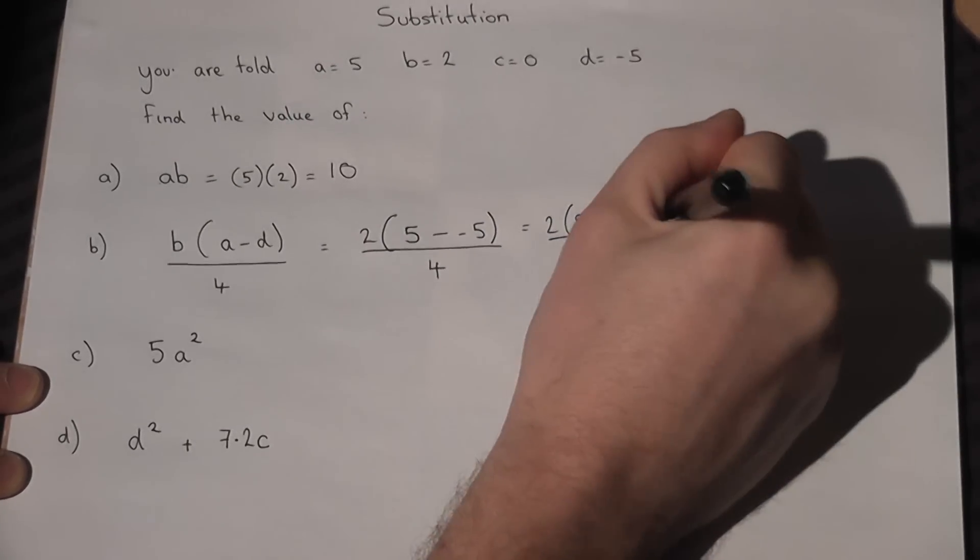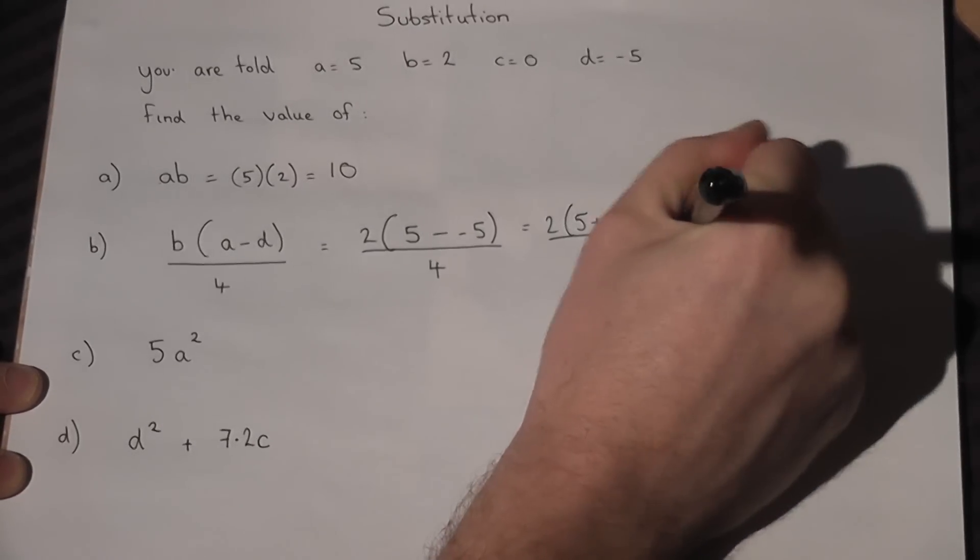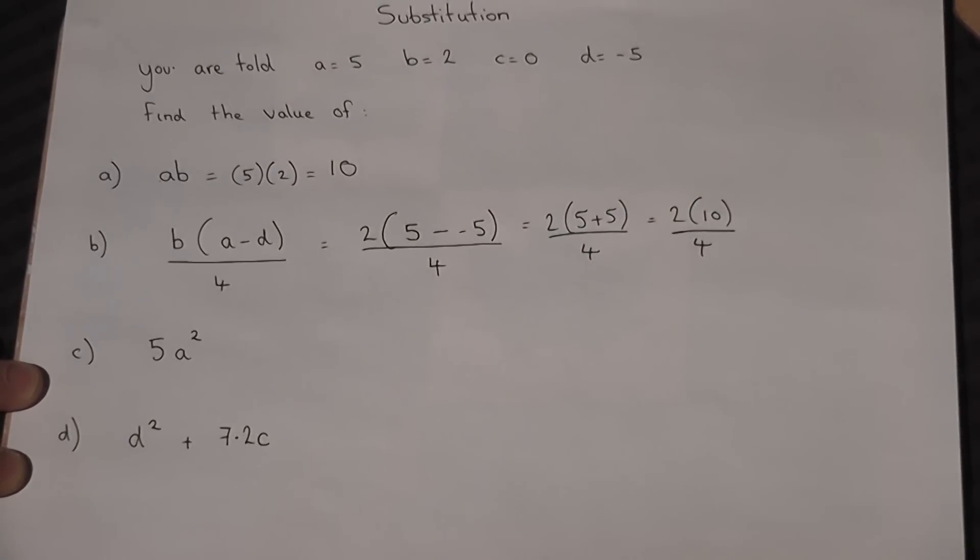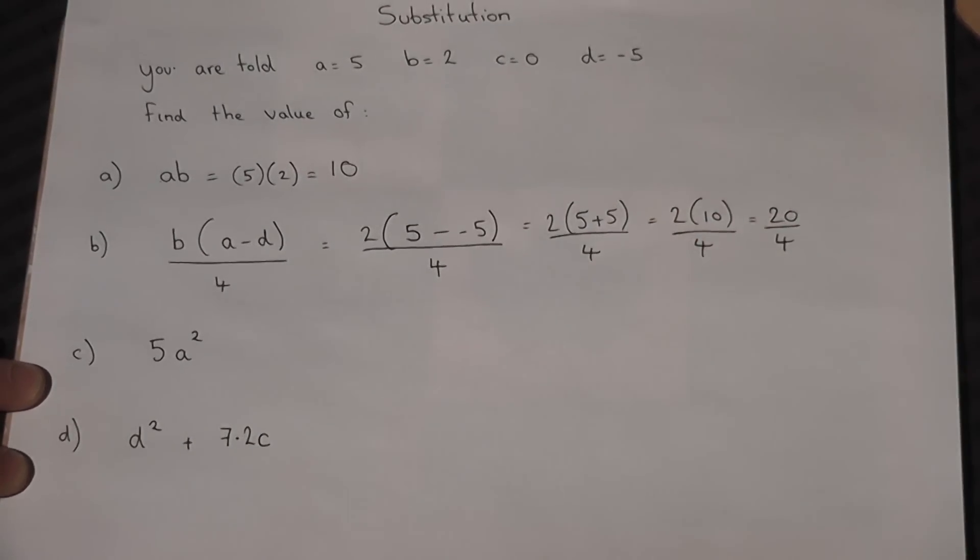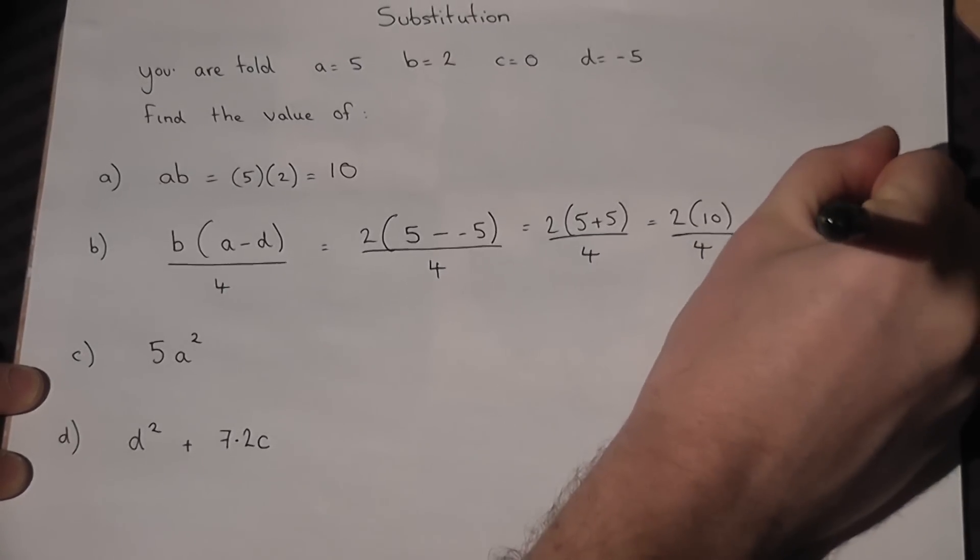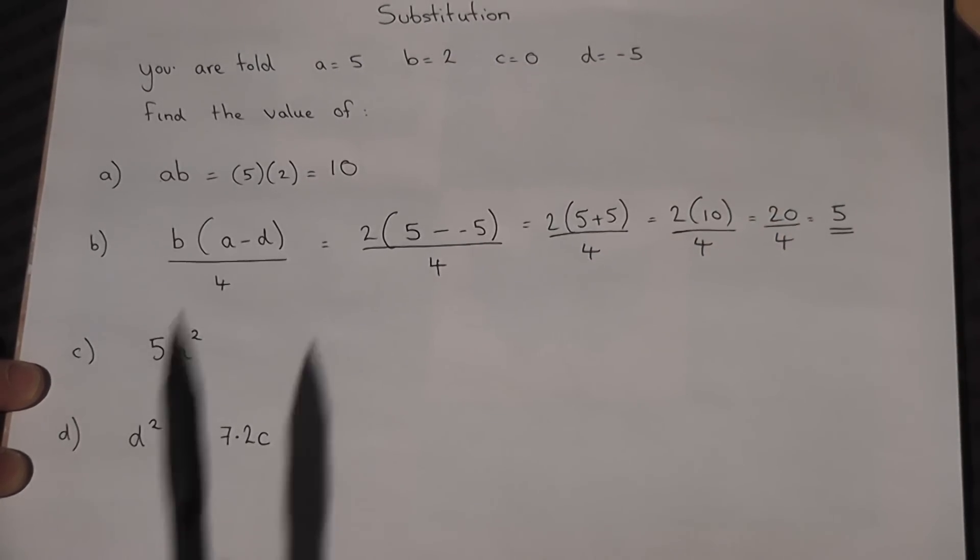Work out the numerator: 2 times 10 is 20 over 4, and how many fours in 20? The answer is 5. This is quite a standard question where one of the values is negative and you're taking it away, so be careful—two negatives go positive.